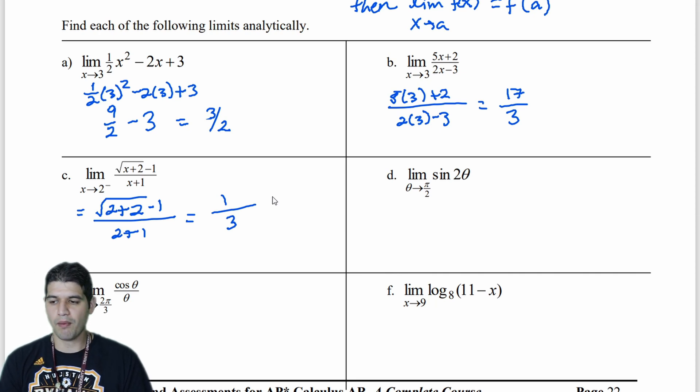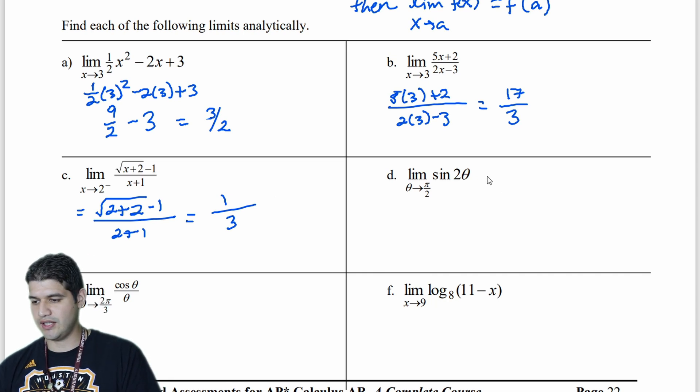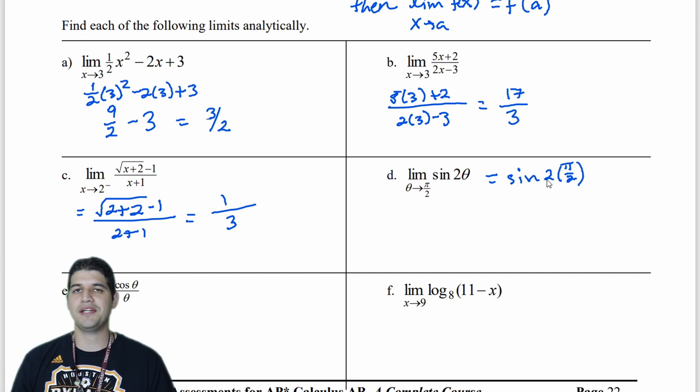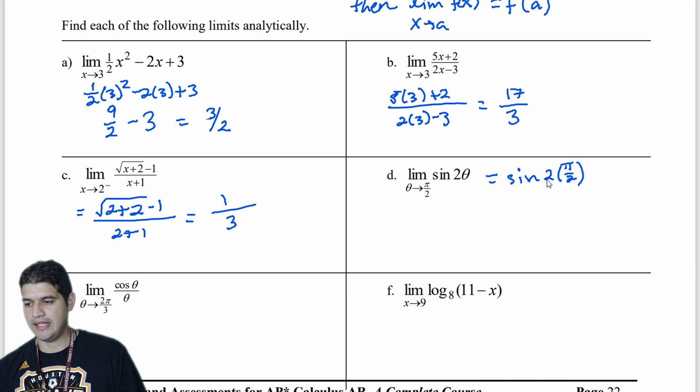Now let's look into a trig problem. The limit as theta approaches pi over 2 is sine of 2 theta. So let's look at this here. Sine of 2 times pi over 2. So that's going to get me sine of pi. And I think about the unit circle there. Sine of pi is equal to 0 because sine is associated to the y values on the unit circle.